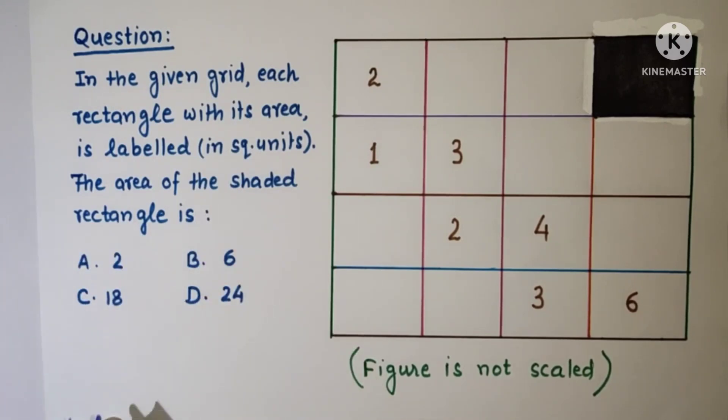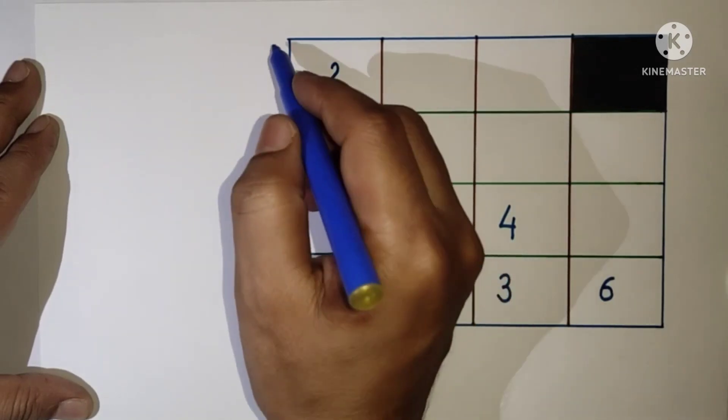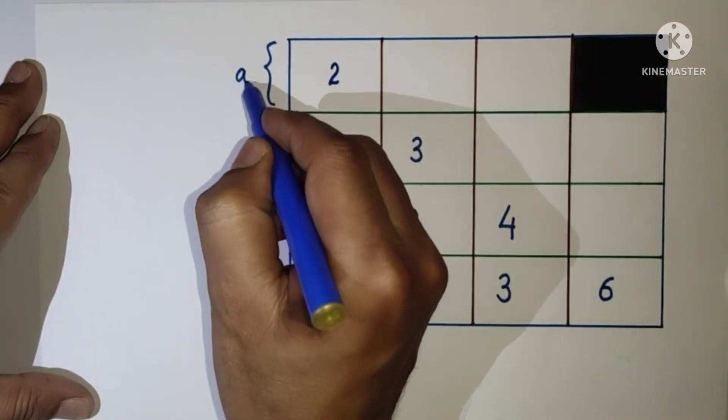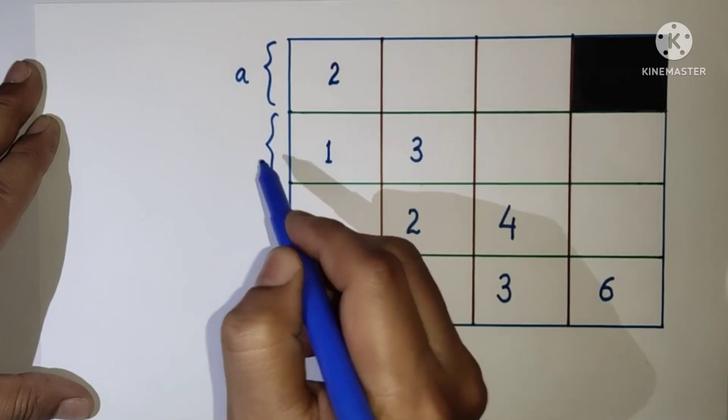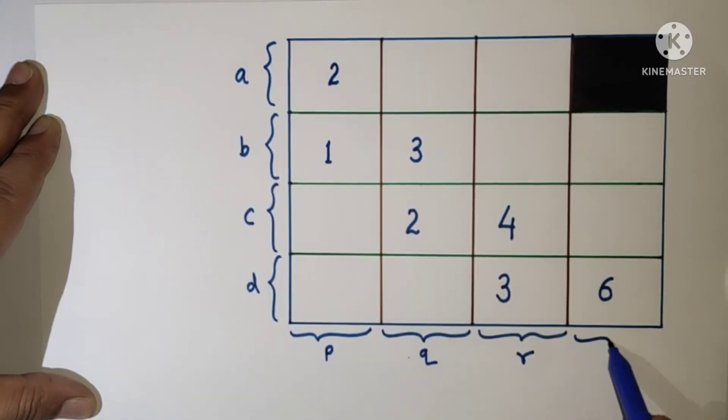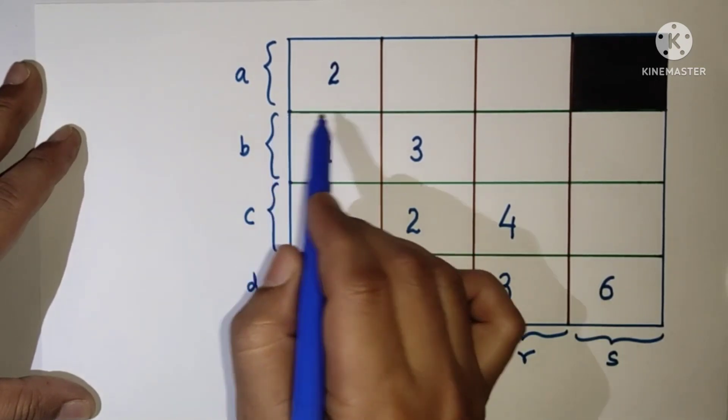So let us suppose this part is a, this part is b, and from here to here is c. This is d. And this is P, this is Q, this is R, so this is S.